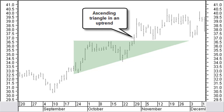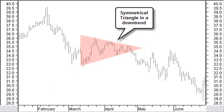A breakout in the direction of the previous trend confirms the continuation pattern. When higher bottoms appear in a reaction to a falling price trend but the tops that follow are lower, it will create a symmetrical triangle in a downtrend. Breaking out of this triangle formation on the lower side confirms the continuation pattern and continues the previous downtrend.